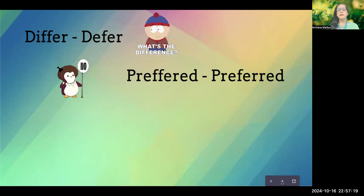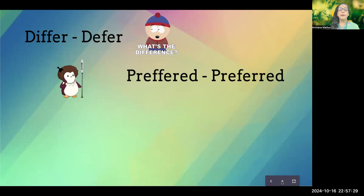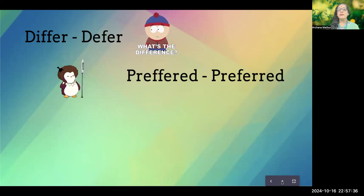There's a common spelling error with the word 'preferred.' People often write it with a double F, which is wrong. The correct spelling has a double R — preferred. Notice the difference in pronunciation: it's not 'prefferred,' it's 'preferred.' Double R is correct; double F is wrong.